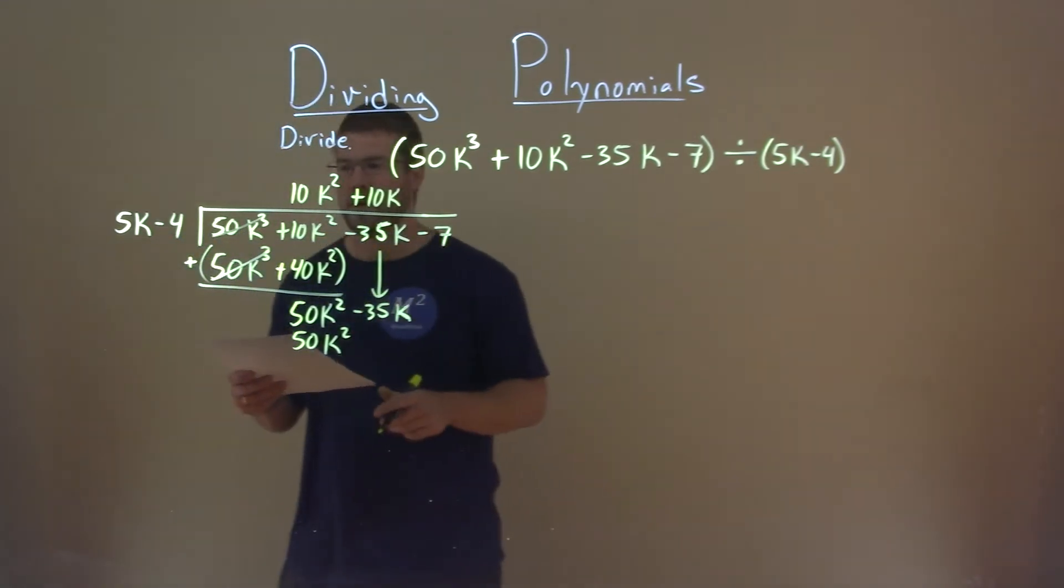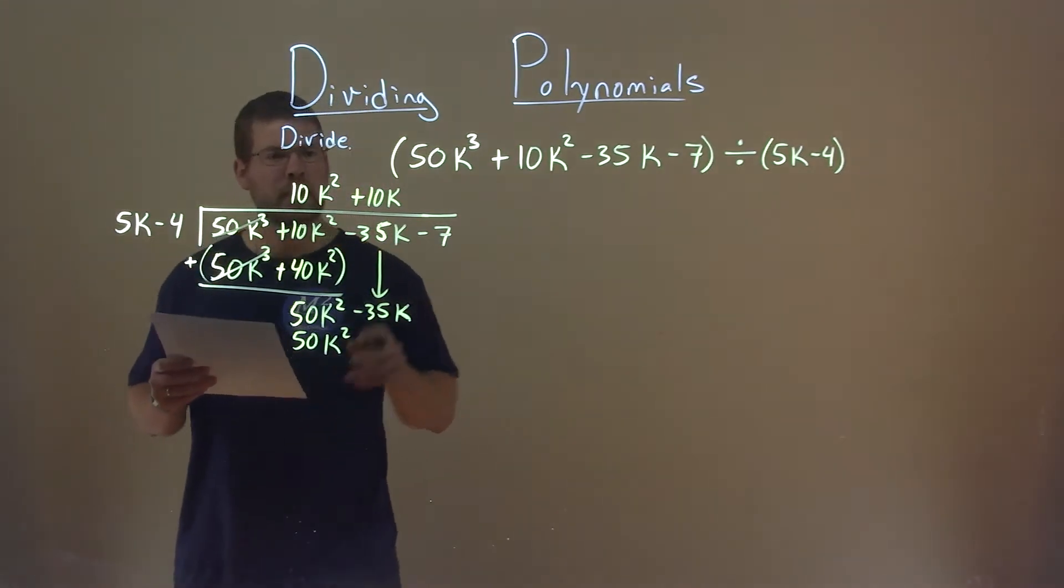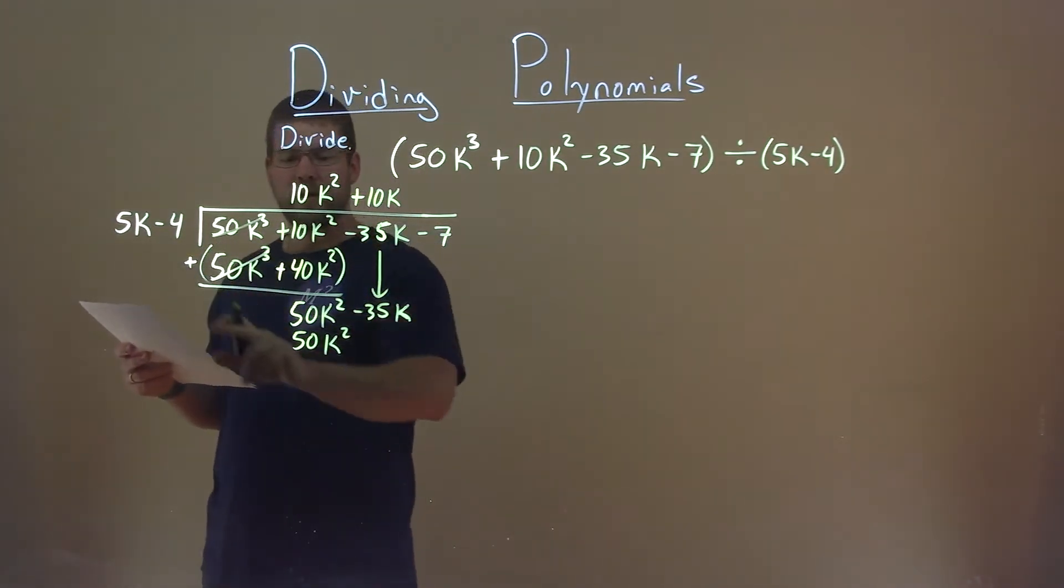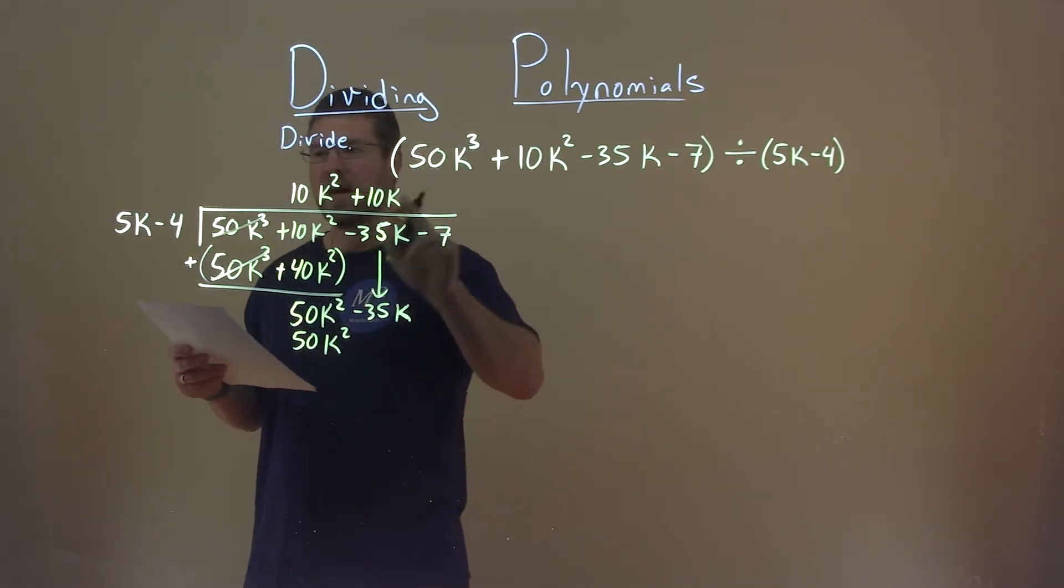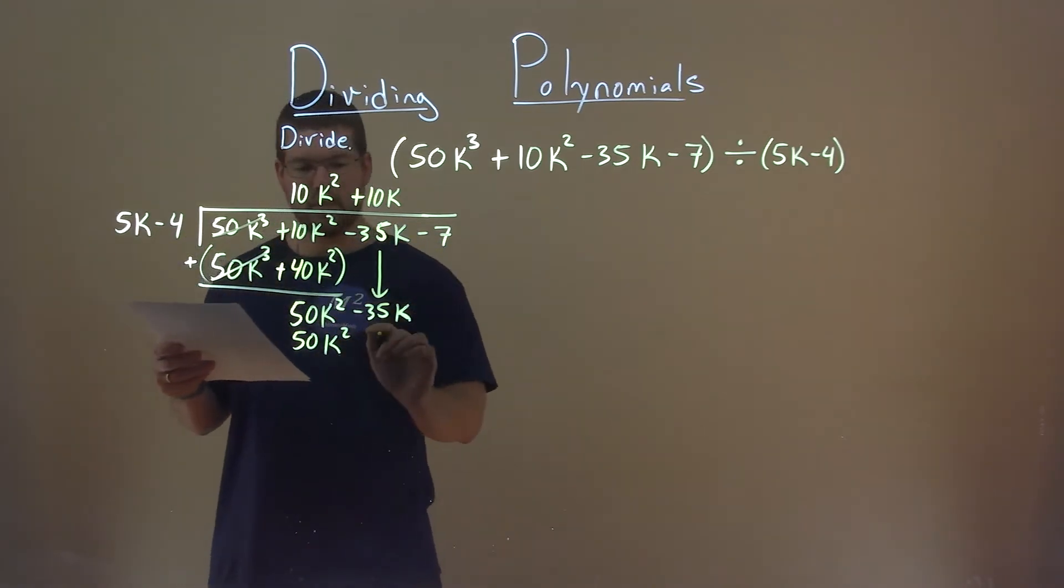If you notice I forgot that, let me know down below. But I caught it, so we're good. So again, 10k times 5k is 50k squared. 10k times minus 4 is a minus 40k.